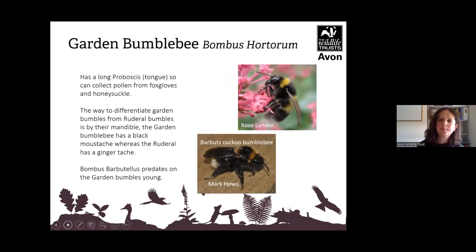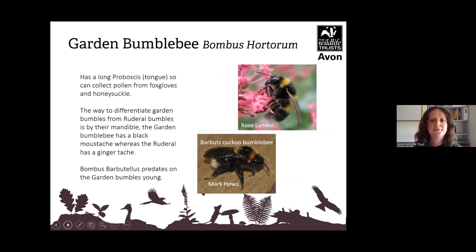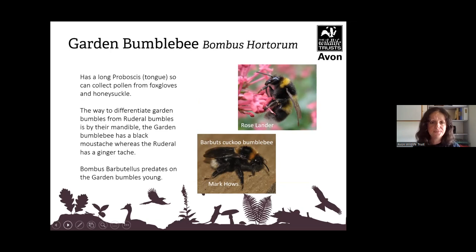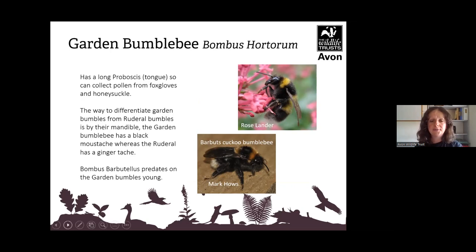The garden bumblebee, Bombus hortorum, has a long proboscis tongue and is one of our larger bees — its tongue can reach into flowers such as foxgloves and bluebells. The way to differentiate the garden bumblebee from the ruderal is by their mandible: the garden bumblebee has a black moustache, whereas the ruderal has a ginger one. Bombus barbitellus, pictured underneath, is actually a cuckoo bumblebee — it predates on the garden bumblebee's young by placing its larvae into the nest.